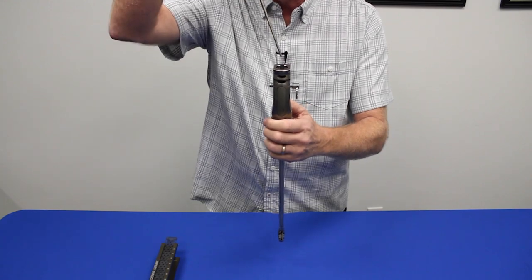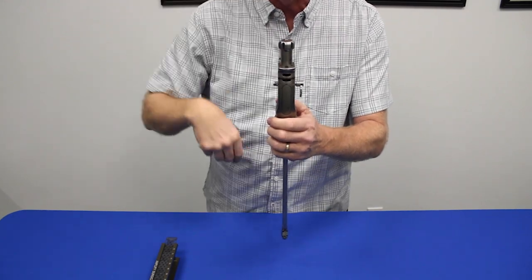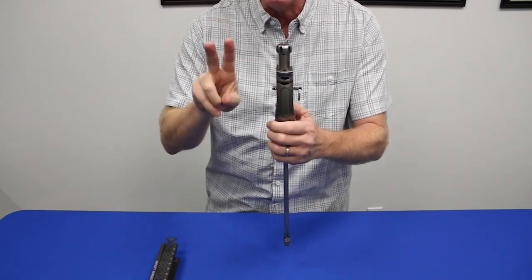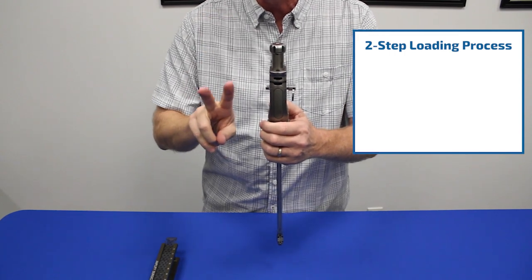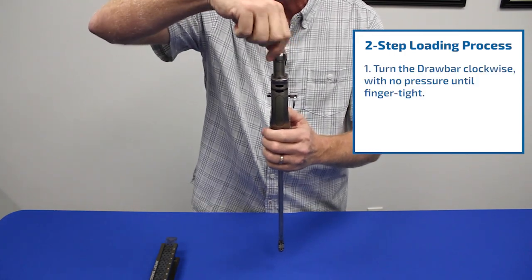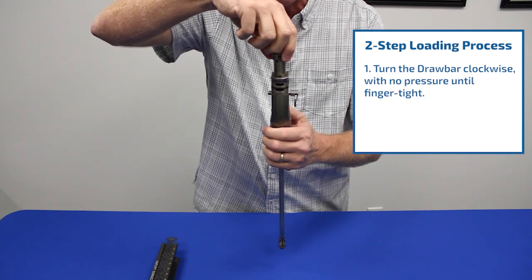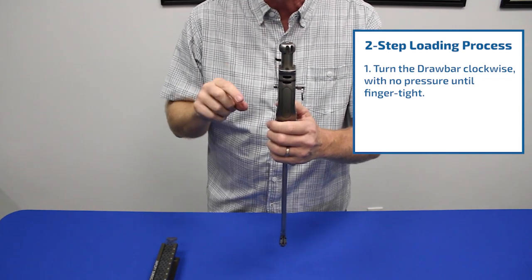We want to take the draw bar and drop the draw bar straight into the handle. This requires two distinct steps. The first one is to turn the draw bar with no pressure, just the gravity that you're using there. Finger tight.